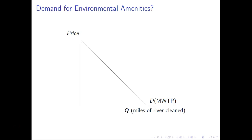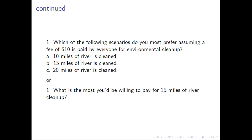Another type of question might be: 'Which scenario do you most prefer, assuming a fee of $10 is paid by everyone for environmental cleanup?' Or you might think about it as a tax: 'Suppose your taxes were increased by $10 — would you prefer 10, 15, or 20 miles of river cleaned?' We can also approach this from a willingness-to-accept framework: 'What is the most you'd be willing to pay for 15 miles of river cleanup?' This also reveals how much dirty river people are willing to accept.